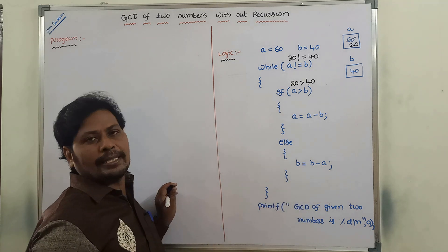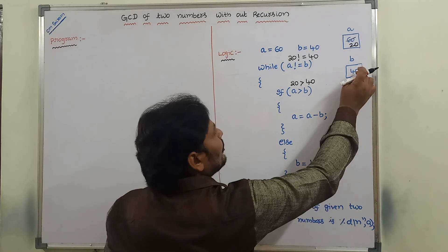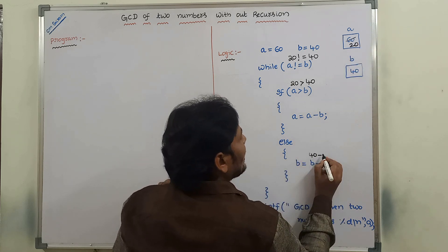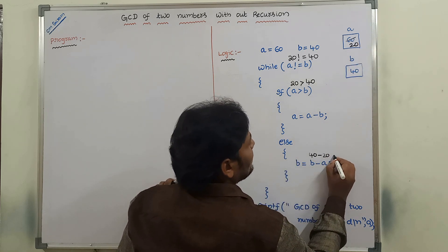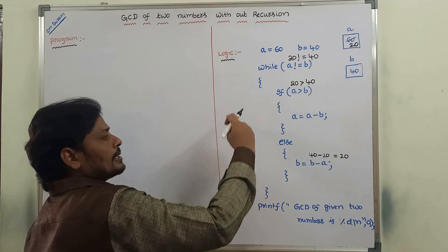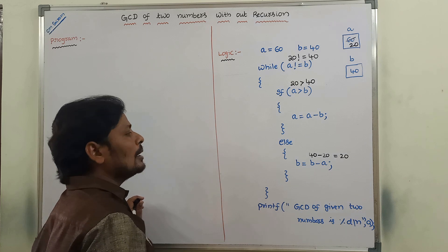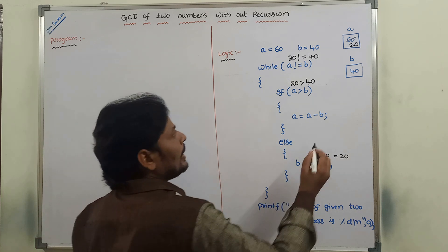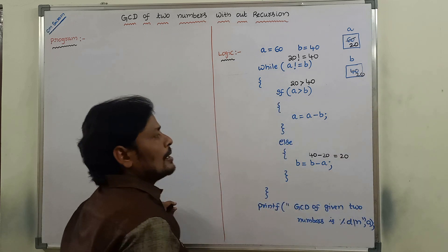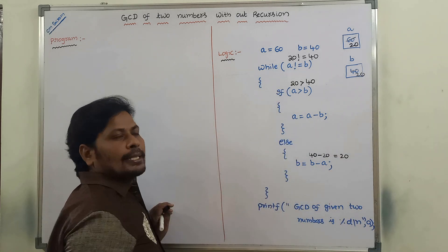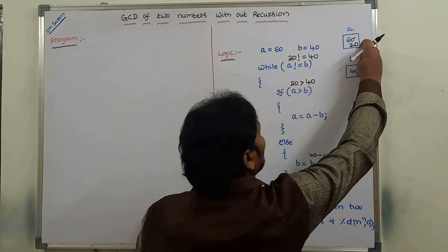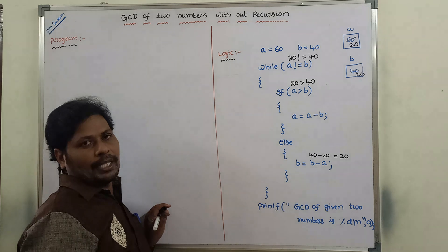In the else block, the statement is B equals B minus A. B value is 40, A value is 20, so 40 minus 20 equals 20. After executing the statements within the else block, B value is updated to 20. After completing the second iteration of the while loop, A value is 20 and B value is 20.